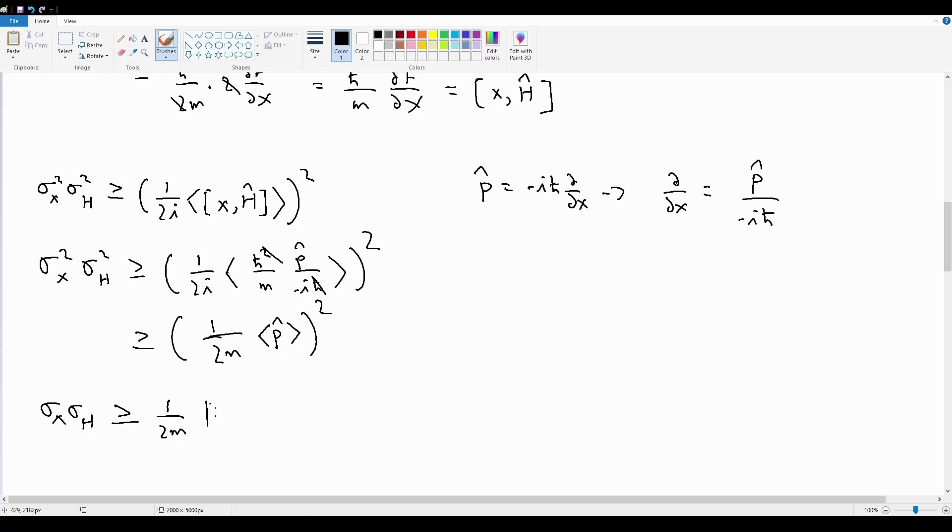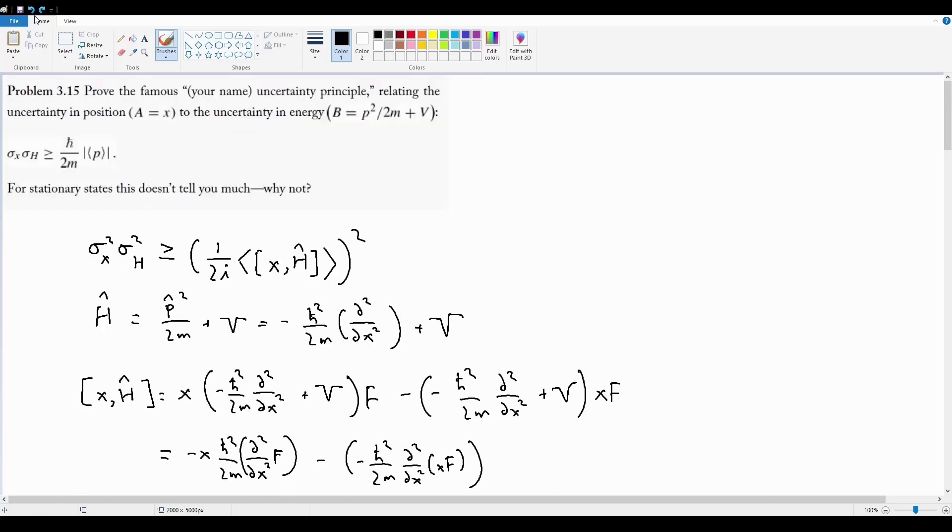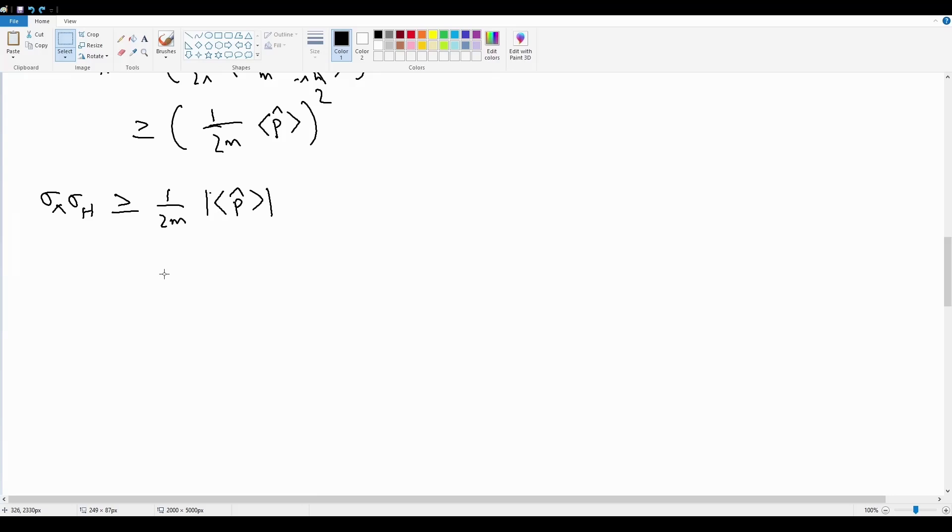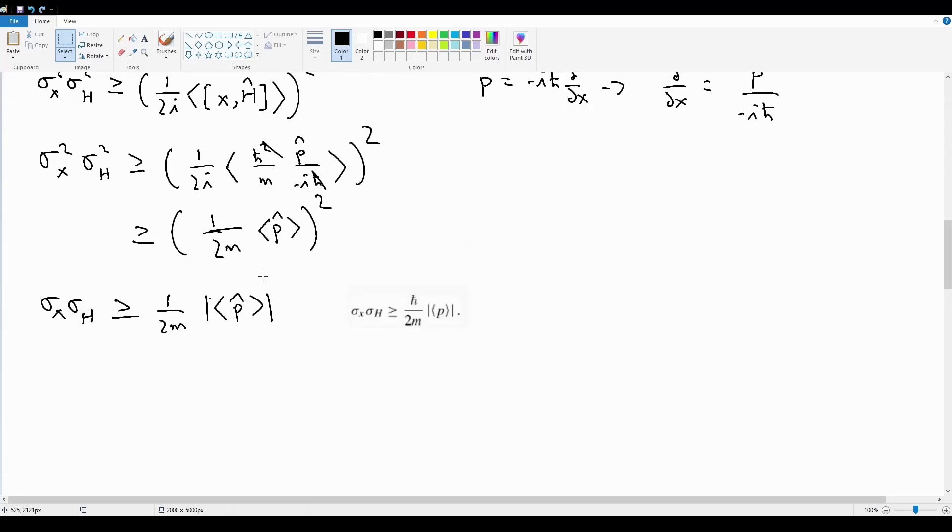Over here, we do actually need to include a magnitude term for the p-hat when we do this, because otherwise p-hat can be technically negative. And in that case, this equation would make no sense, because this term has to always be positive. Uncertainties always have to be positive. We can't have negative uncertainties. So in order to resolve that conflict, we just attach this absolute value term at the front. And with that, we are done. We've obtained the answer for this first part. I'm missing an h-bar - I left out the h-bar over here, so that h-bar still comes out. So h-bar over 2m magnitude expectation value of p.